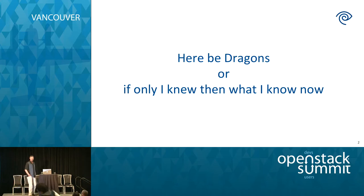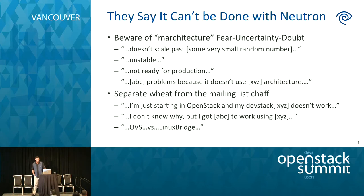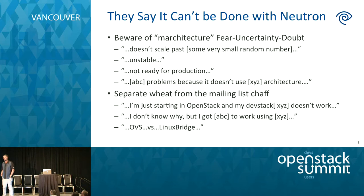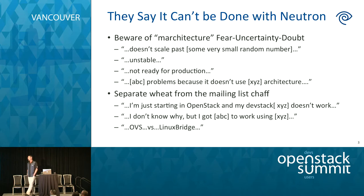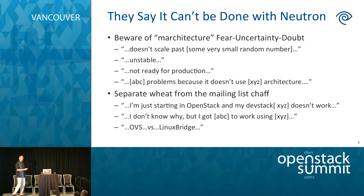There are some use cases that Neutron definitely can't fulfill, but in general you may go online researching a new implementation or trying to move from Nova Networking to Neutron and read things like 'it doesn't scale' and other concerns. Then you go on the mailing list and find trivial questions. So up front, there's a lot of scary information out there.